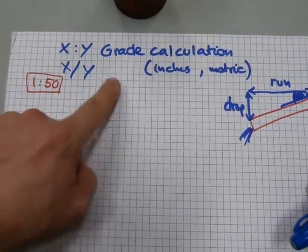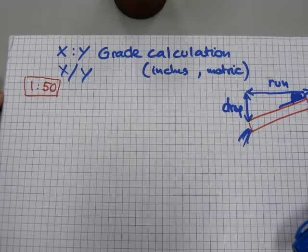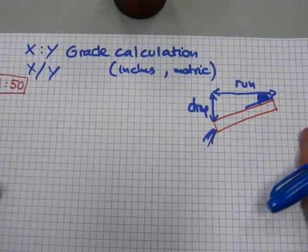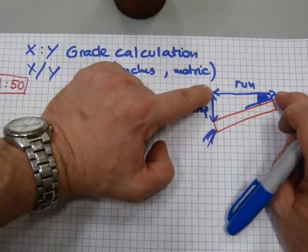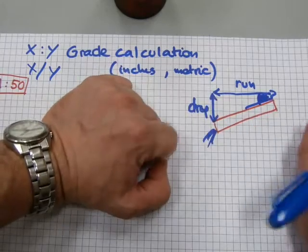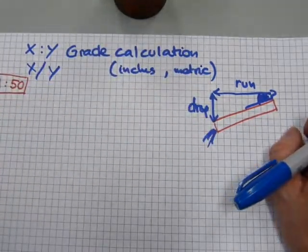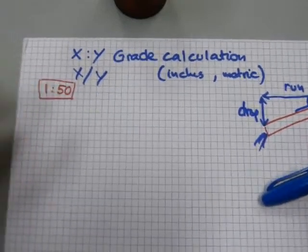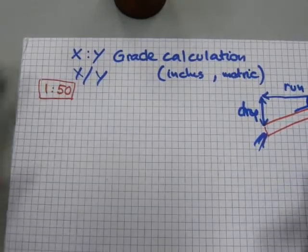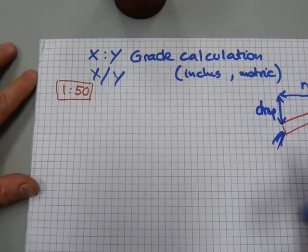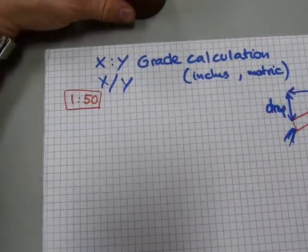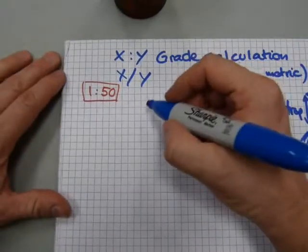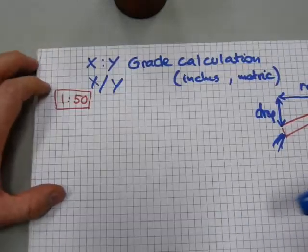Last time we calculated drop. This time we are going to calculate the actual grade. For example, we have a certain run that's given on a blueprint. And we've built a piece of pipe in with a certain amount of drop. And now we need to know if that drop actually corresponds to the grade that we're supposed to meet. Let's do some math here, for example. And let's do it in inches first, and after that in metric.